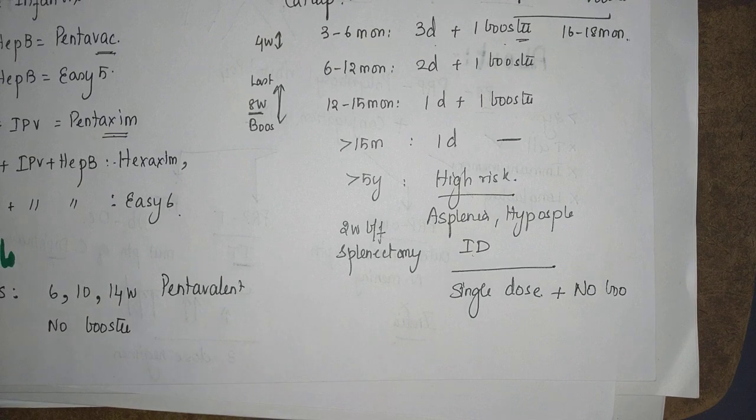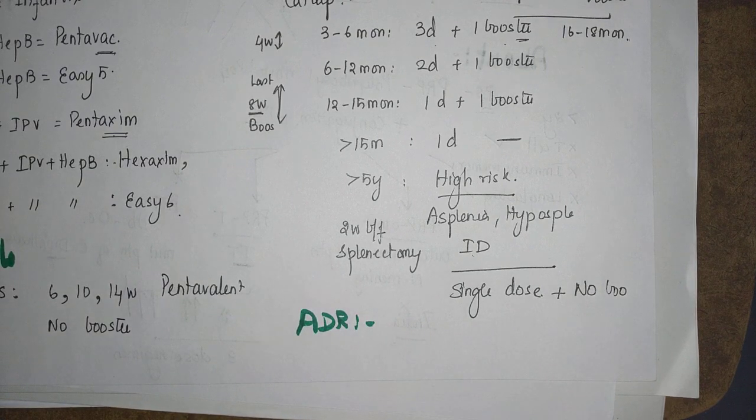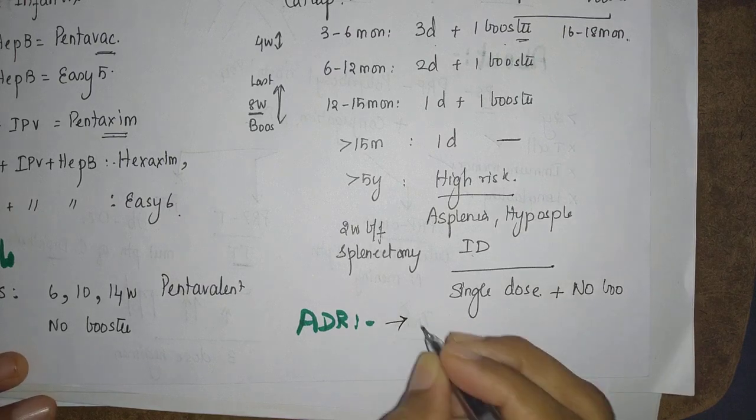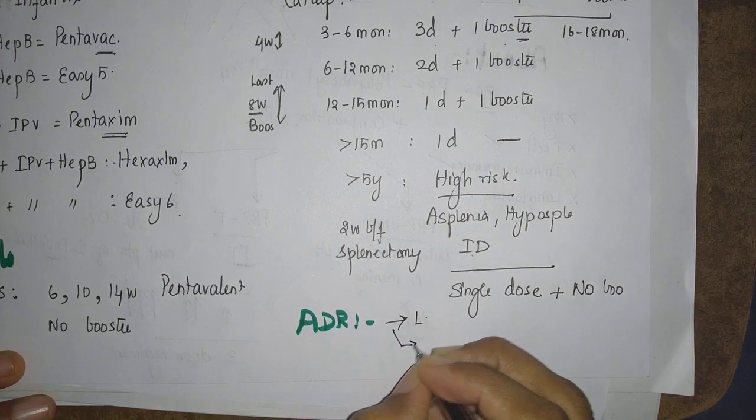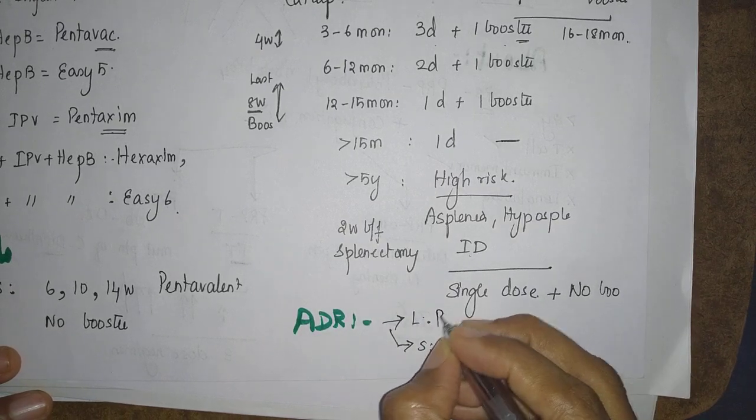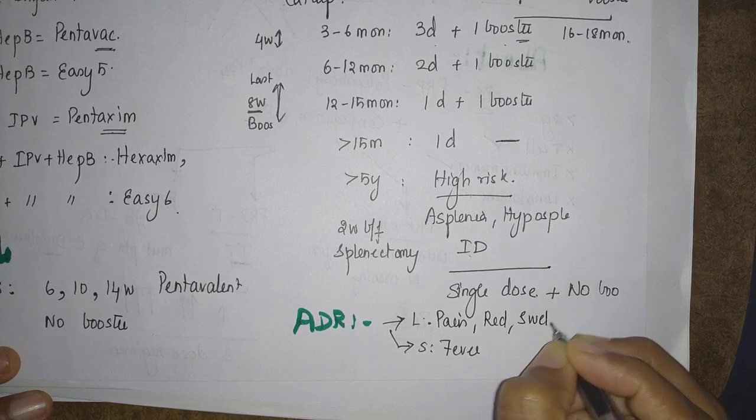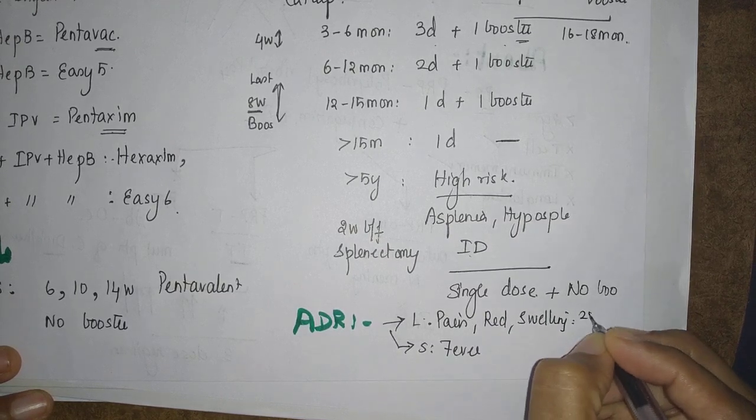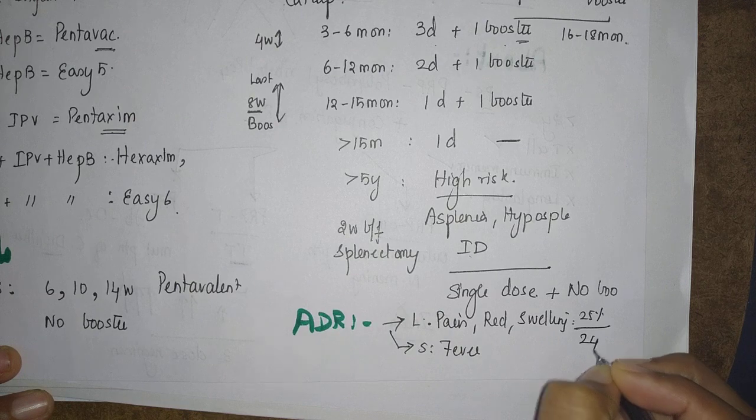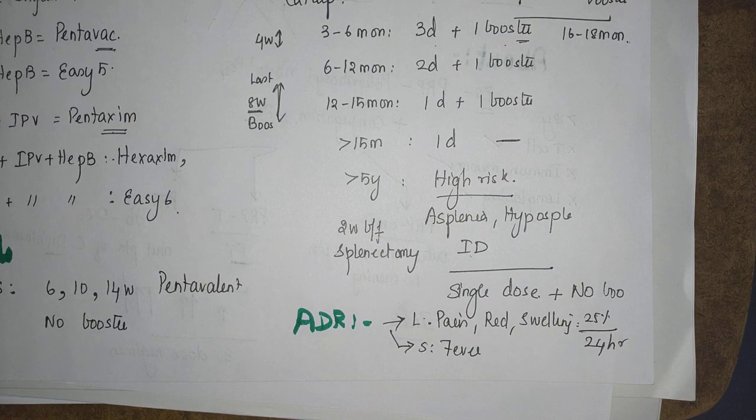What are the adverse drug reactions? Adverse drug reactions similar to every other vaccine: local and systemic. Systemic is fever. What about local? Local you will have some pain, redness, swelling. It is present in 25% but decreases by 24 hours. That's all about your Haemophilus Influenza B. Thank you guys.